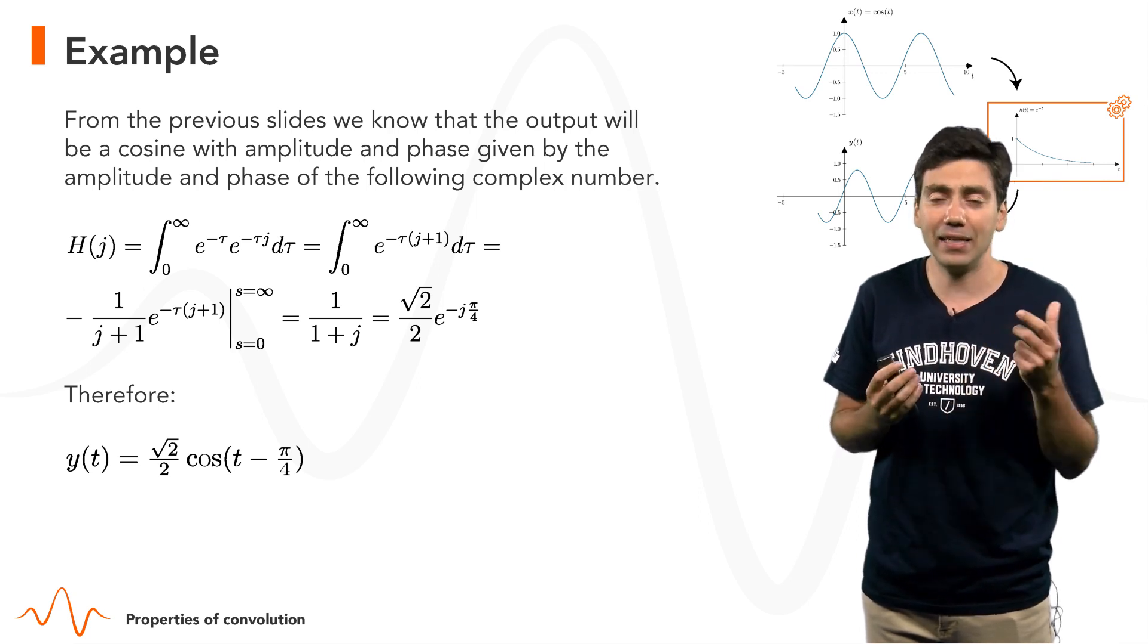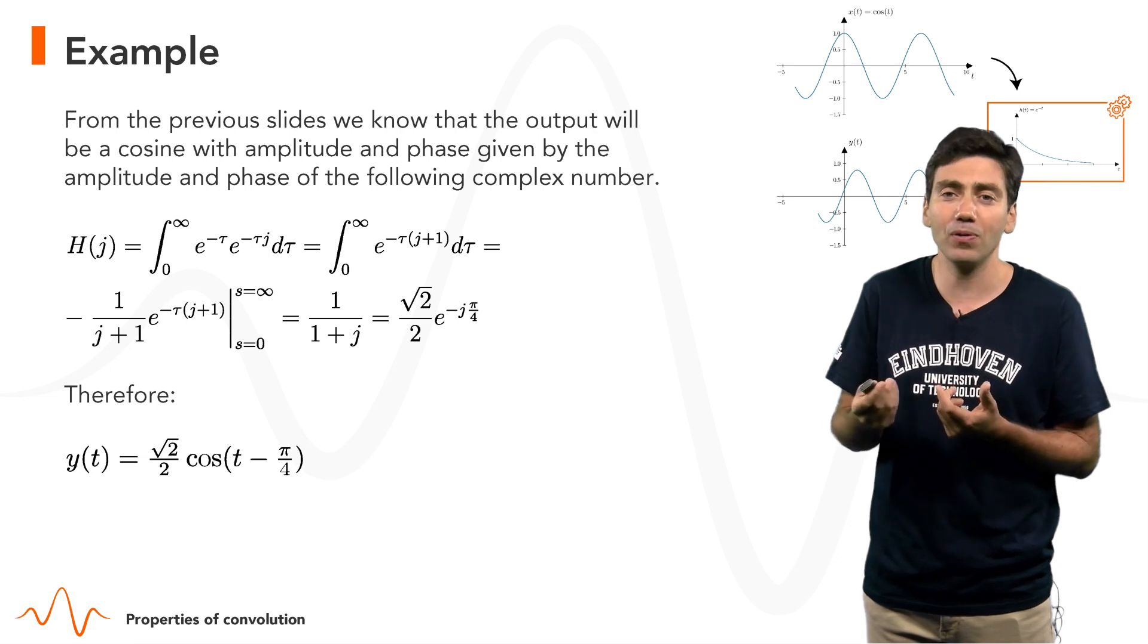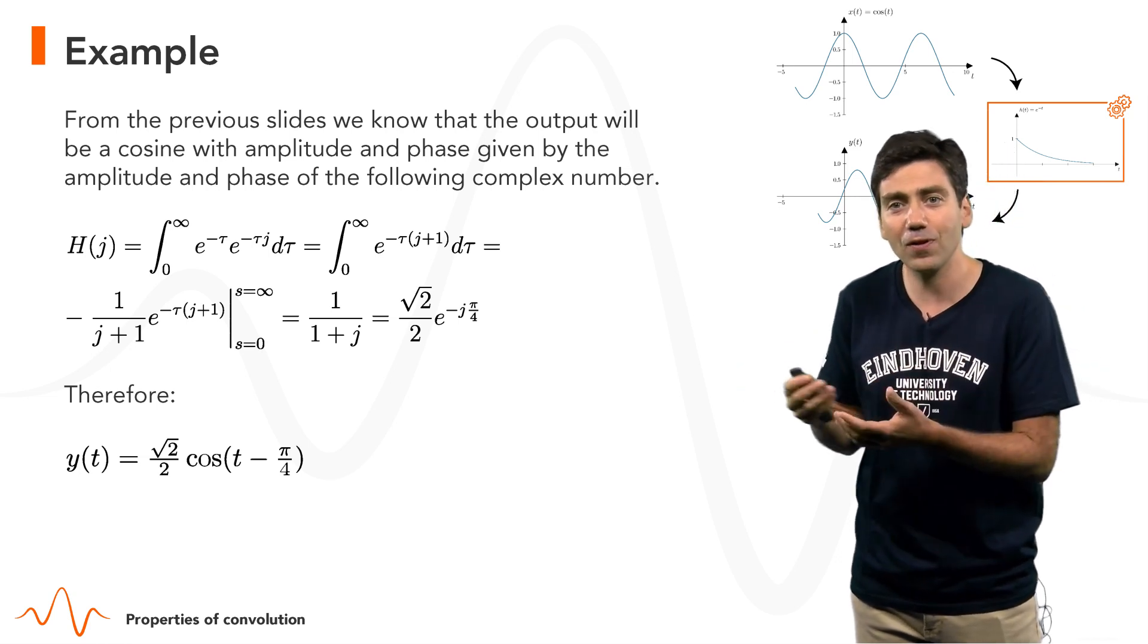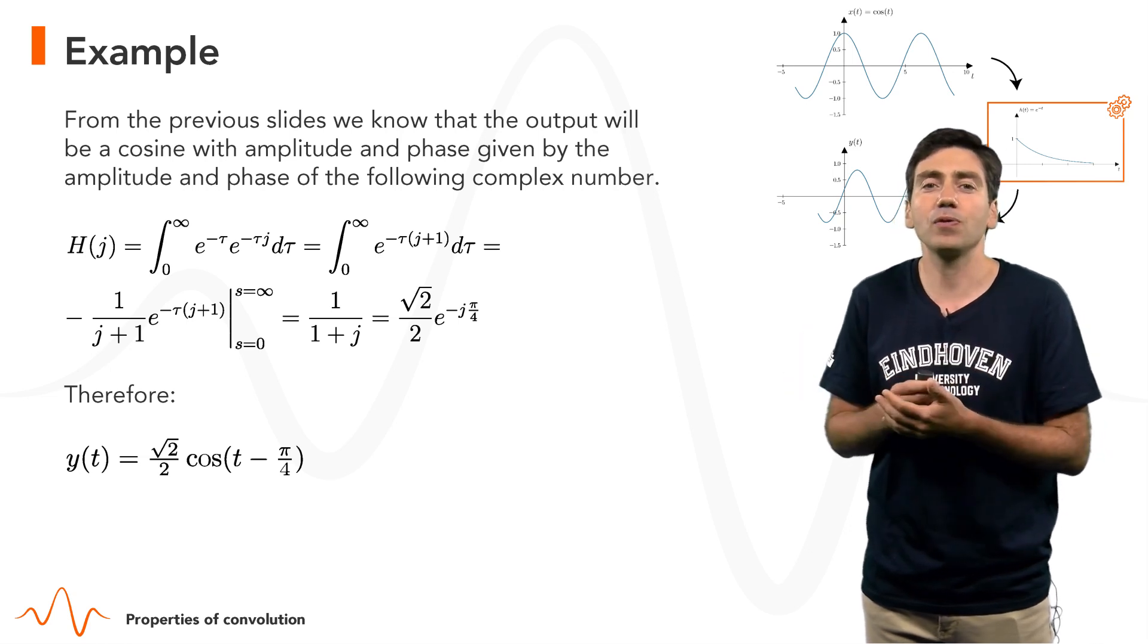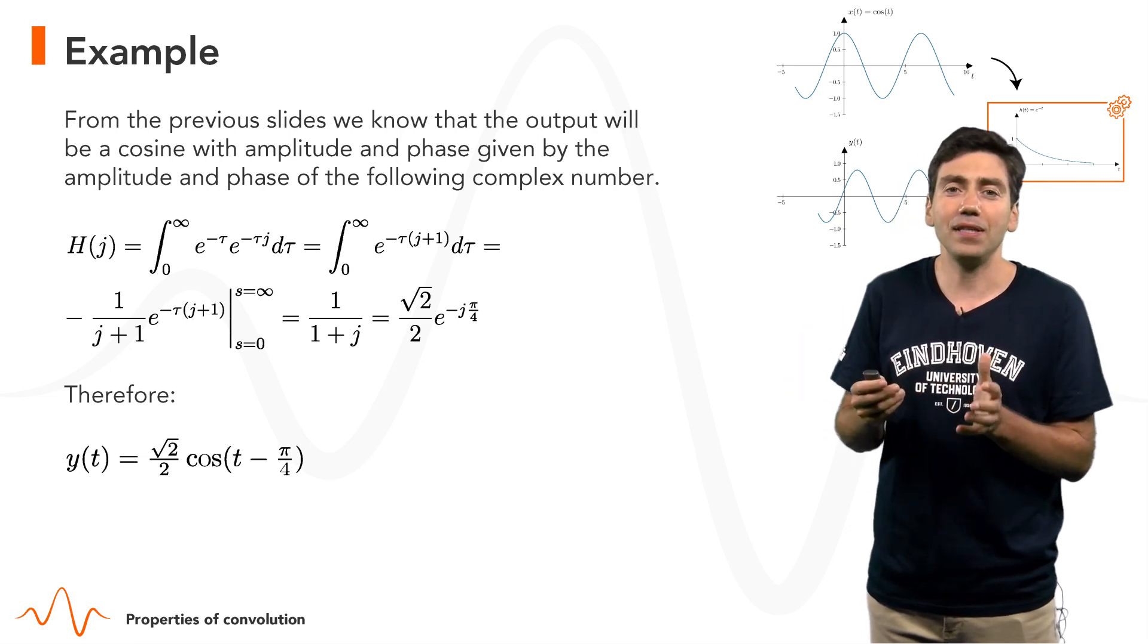And that means that the input signal gets multiplied by √2/2 and gets a phase shift of -π/4, so the output is √2/2 cos(t - π/4).